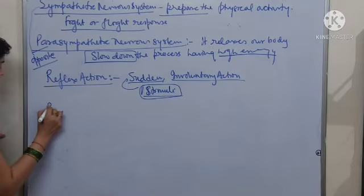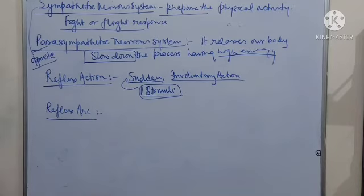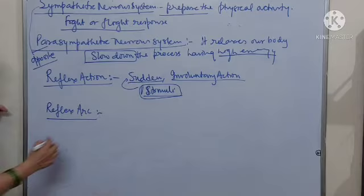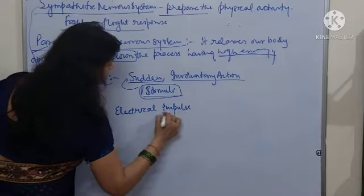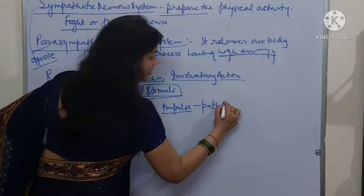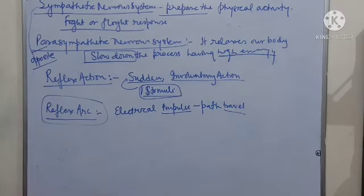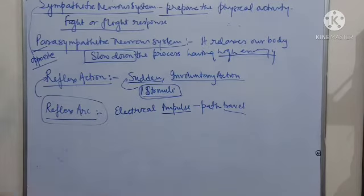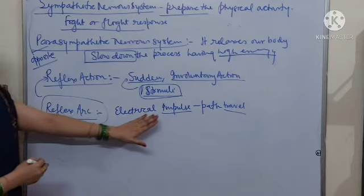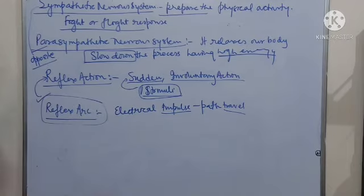Now, what is a reflex arc? It is the path followed by an electrical impulse during reflex action. The complete path travelled by the electrical impulse — from the receptor organ through the neurons to the brain or spinal cord — is known as the reflex arc.